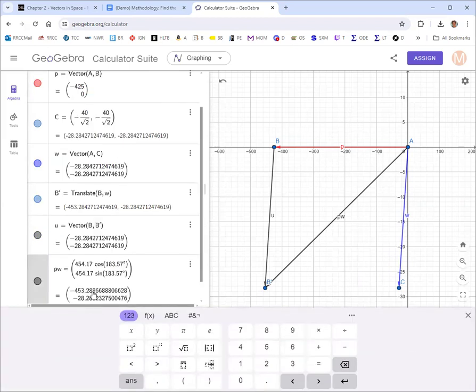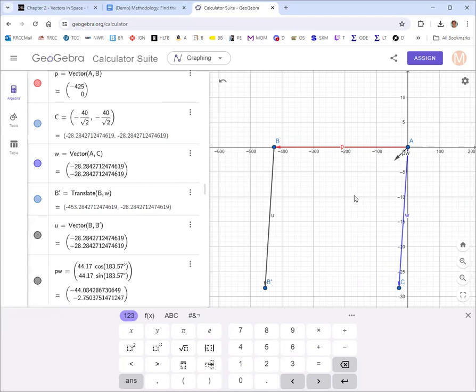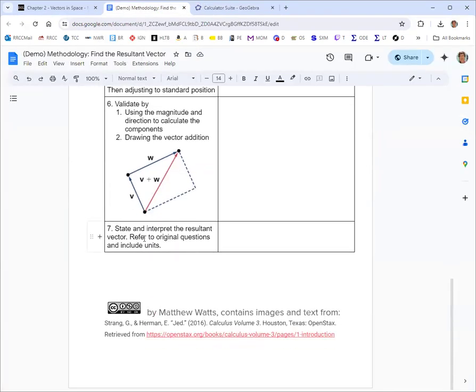If we made a mistake and maybe didn't convert to standard position, you'd be pointing in the wrong direction. Or if we had just the wrong magnitude altogether, you can see it wouldn't get to the point. So those would kind of let us know that we made a mistake somewhere and we could find that mistake and correct it before we submitted our work. That's the goal with the validation, find any mistakes. So we knew at step seven, state and interpret the resultant vector, refer to original questions, include units.